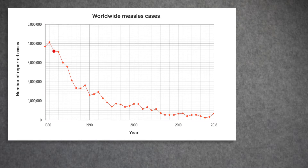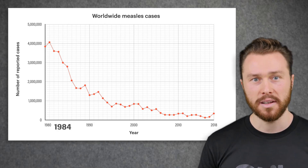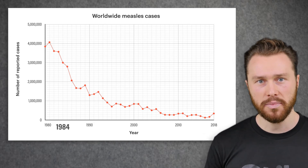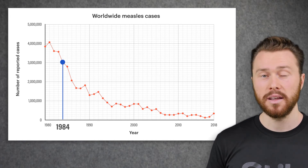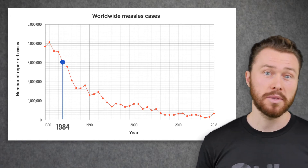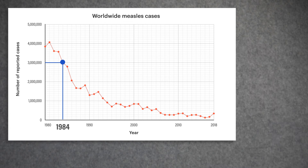Each point on the graph tells us the number of measles cases that were reported in that year. For example, to find the number of cases in 1984, we go up from 1984 on the x-axis, then read across from the line to find the value on the y-axis. We can see that there were about three million cases of measles around the world in that year.